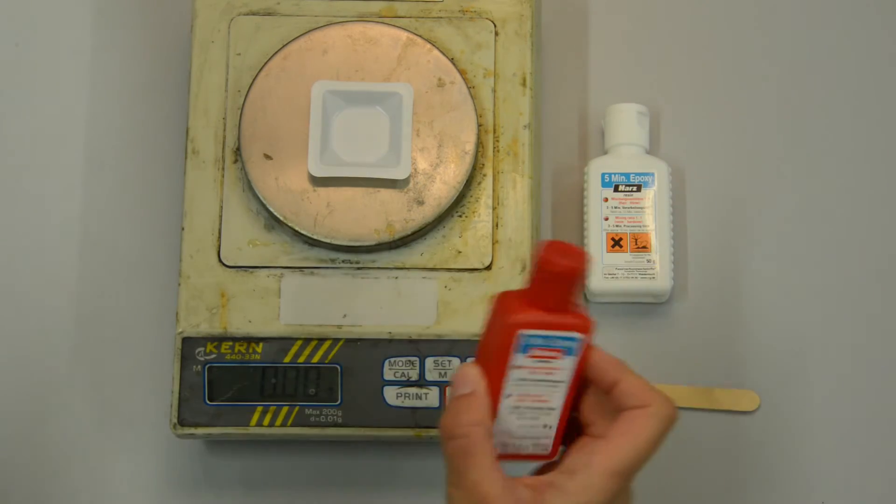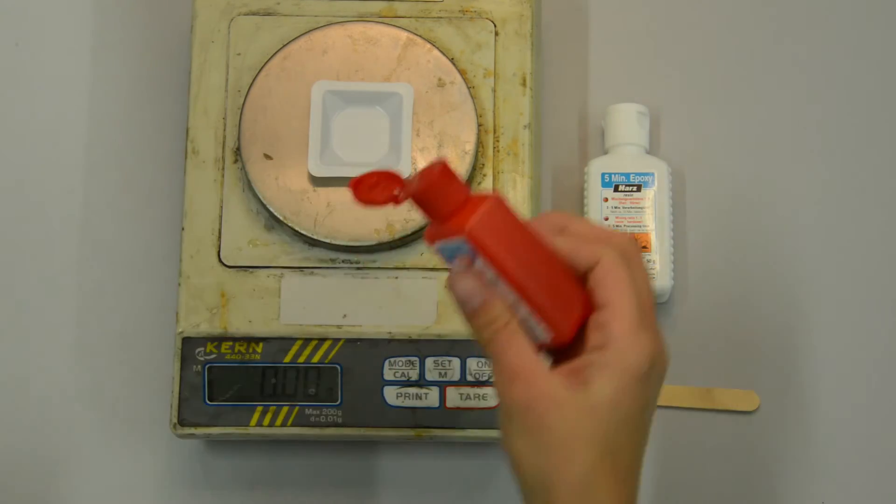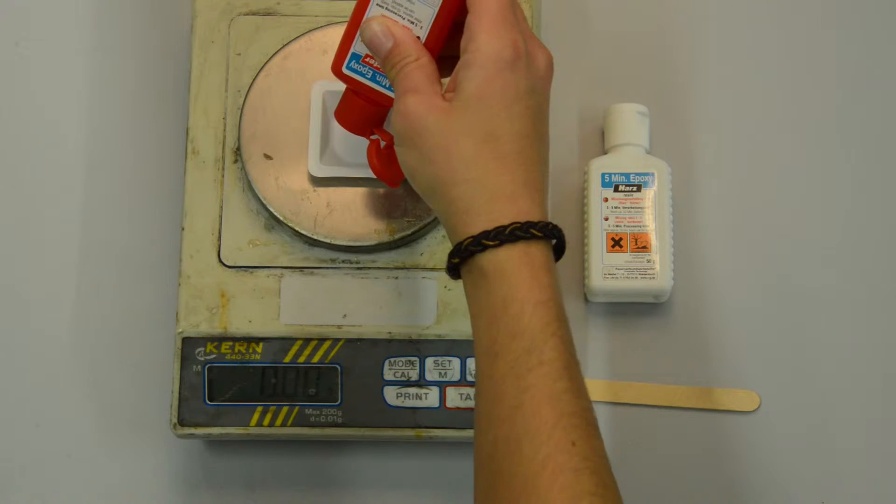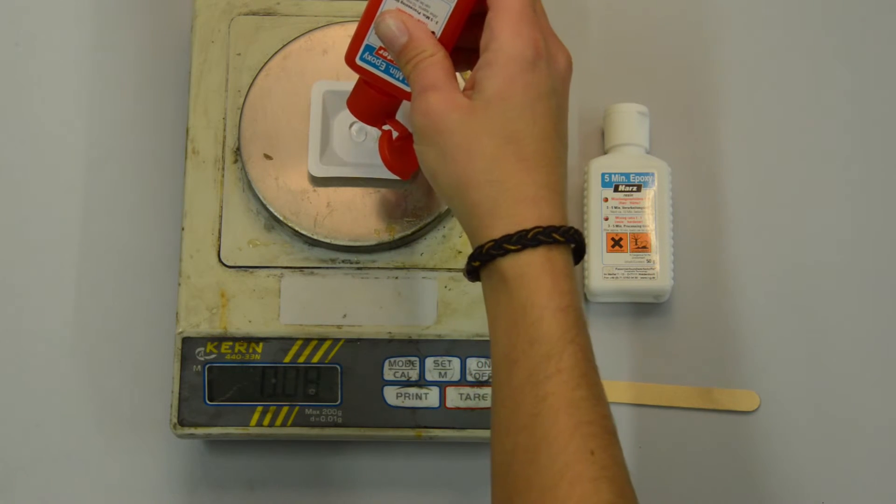To prepare epoxy glue, measure out the proper proportion of resin and hardener and mix well. Be sure to check the glue's working time and plan accordingly.